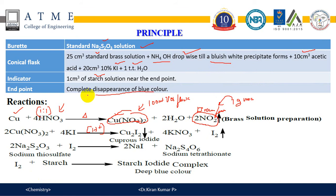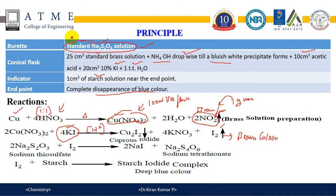Now potassium iodide is added. Once potassium iodide is added, iodine reacts with copper to form cuprous iodide, which is a precipitate, and iodine is liberated — giving the solution a brown color. This liberated iodine is titrated against sodium thiosulfate taken in a burette, where the iodine liberated is exactly equivalent to the copper present. By measuring the iodine liberated, we measure the amount of copper present in the brass sample.